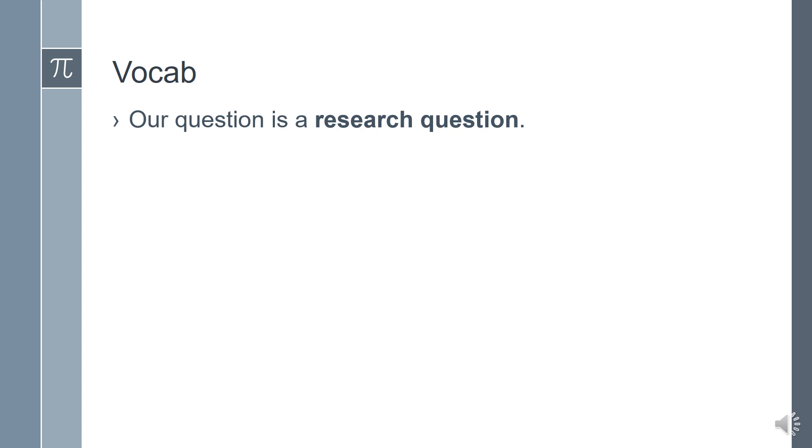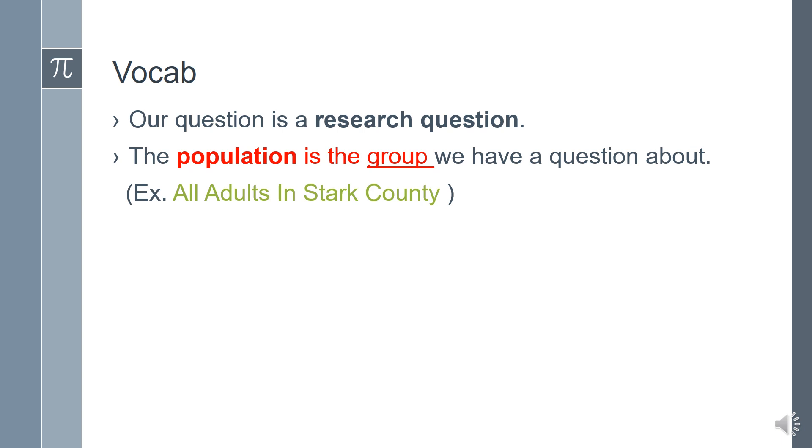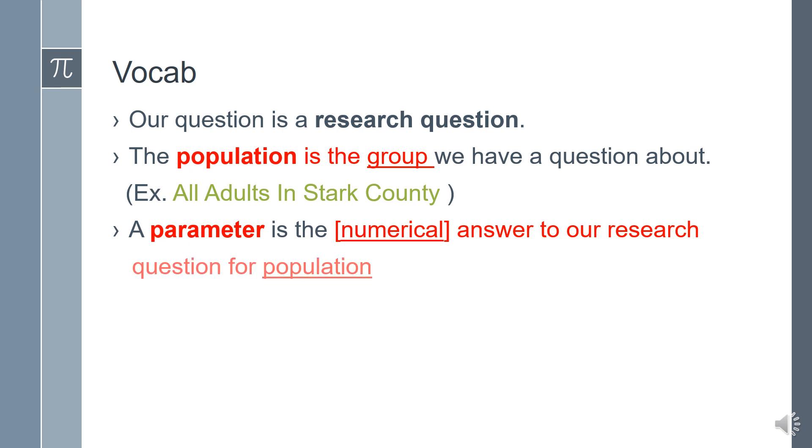This is where we get into the heart of statistics. We have a question. Is that question practical or is it impractical to answer? We have a research question. Remember items in red and green are of importance to write down. Population is the group that we have the question about. Maybe we want to talk about all the adults in Stark County. We have a parameter as the answer to our research question about the population. Parameters are impossible to answer sometimes.